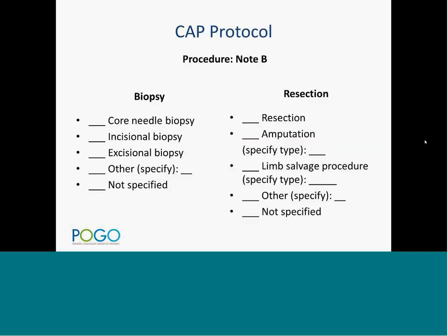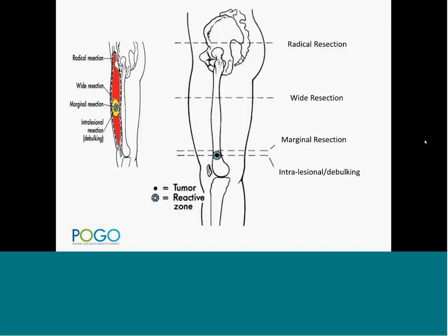Now entering the CAP protocol. For biopsy, the procedure can be a core biopsy, incisional biopsy, or excisional biopsy. For resection, it can be amputation, limb salvage, or simply resection.